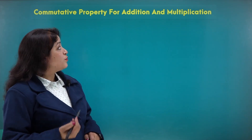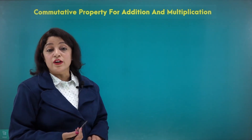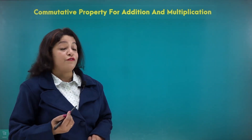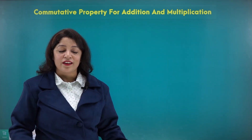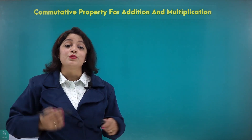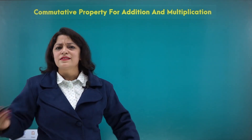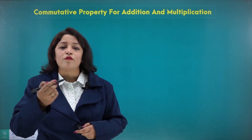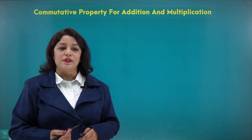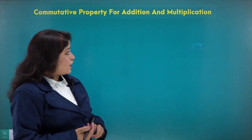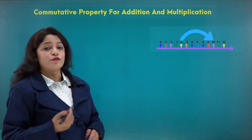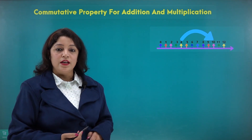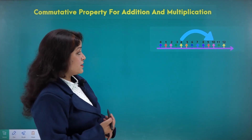The commutative property for addition and multiplication is a very important and very simple one. Commutative comes from 'commute' — to move from one place to another. Let's check it out first for addition of whole numbers.